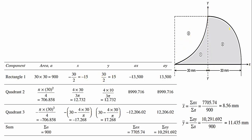For the quarter circle (second figure), the centroid formula is 4r/3π from the base. So x̄ = 4 × 30 / (3π) and ȳ = 4r/3π = 12.732 mm from the base.